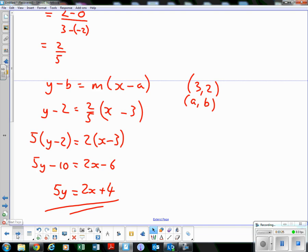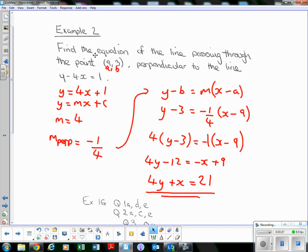Example 2: Find the equation of the line passing through the point (9, 3), perpendicular to the line y minus 4x equals 1. Again, to use y minus b equals m(x minus a), we need the gradient of the line and a point on the line. We know the point (9, 3) is on the line and it's perpendicular to this line. What's the gradient of this? At the moment we don't know, but if we put it in the format y equals mx plus c by moving the negative 4x across, adding 4x to both sides, we get y equals 4x plus 1. So here the gradient's 4.